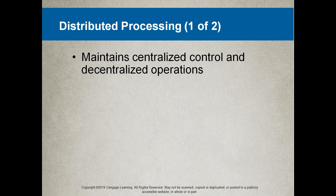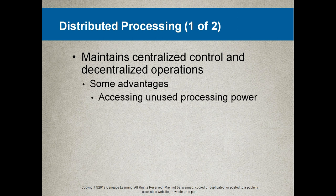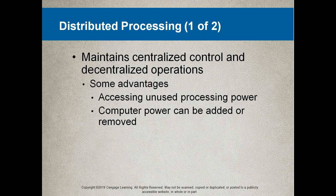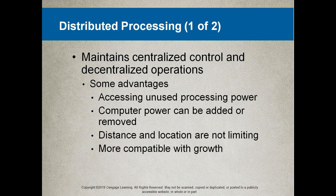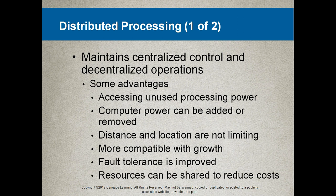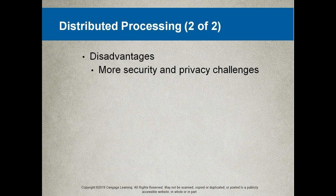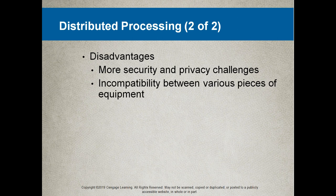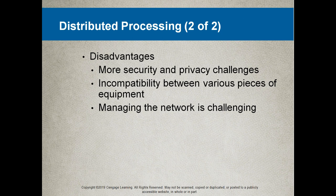Distributed processing maintains centralized control and decentralized operations. Advantages include accessing unused processing power, the ability to add or remove computer power, no distance or location limitations, better compatibility with growth, improved fault tolerance — if one computer fails it doesn't take the whole system with it — and shared resources to reduce costs. Disadvantages include the need for more security, privacy challenges, potential incompatibility between equipment, and the challenge of managing a bigger and more distributed network.